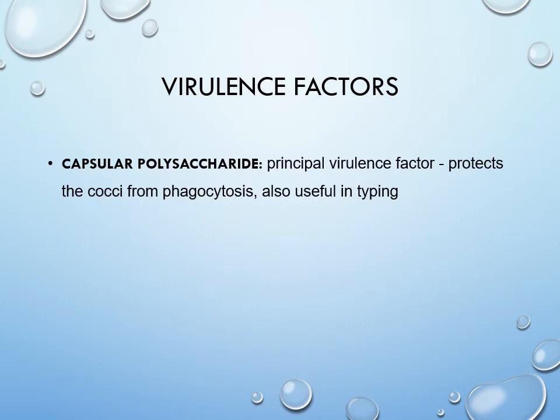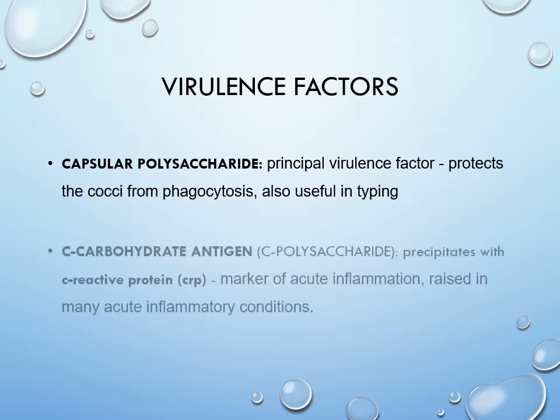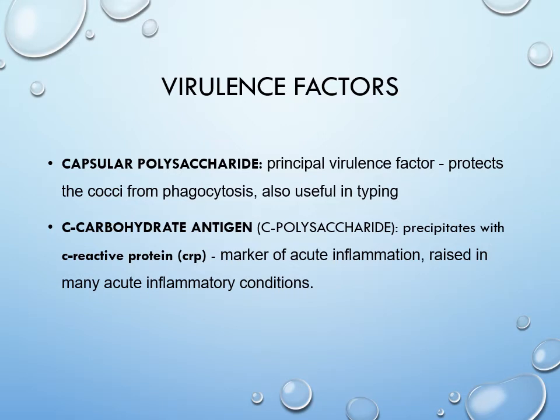What are the virulence factors of S. pneumoniae? One is the capsular polysaccharide. The presence of a capsule is a very important virulence factor for this bacterium — it protects the bacteria from phagocytosis. This is why it is a major causative agent for both pneumonia and meningitis. The capsule also allows us to type different strains of S. pneumoniae.